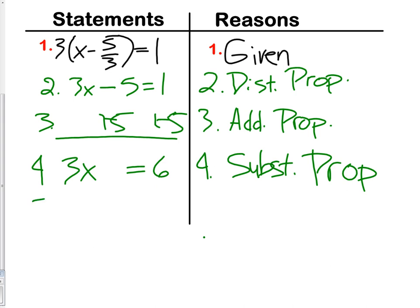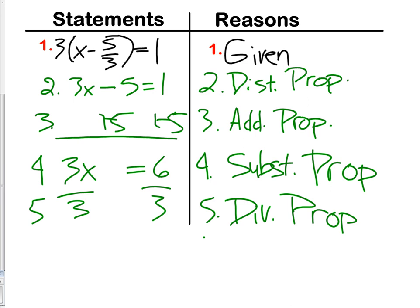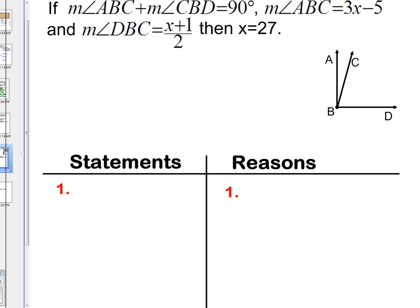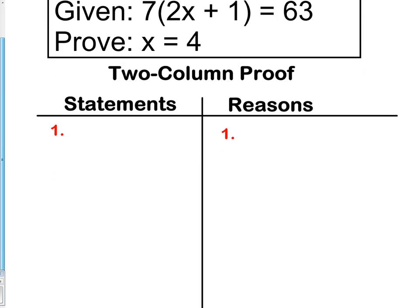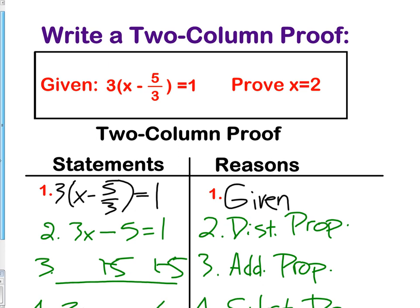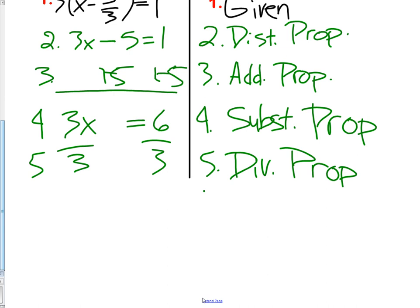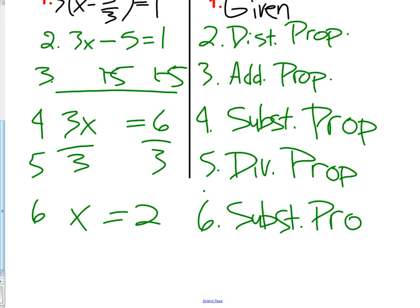On to step 5: we divided by 3, and the reason is obviously the division property. And our final step is to state that x equals 2. The reason we're able to do this is the substitution property — we substituted 6 divided by 3 with 2, and 3 divided by 3 with 1x.